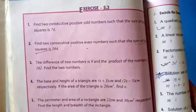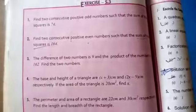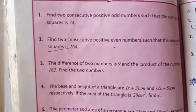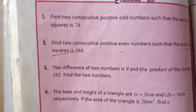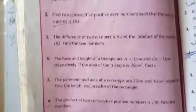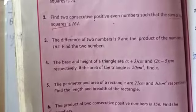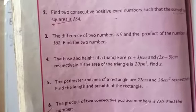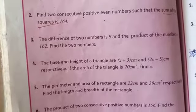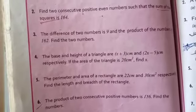Yesterday we have done question number three and four. Today we are going to start question number five. The question number five is: the perimeter and area of a rectangle are 22 cm and 30 cm square respectively. Find the length and breadth of the rectangle.